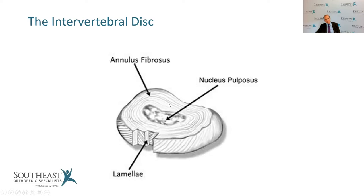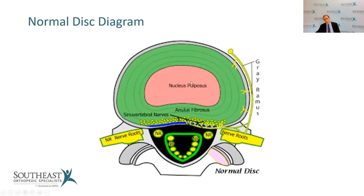When you get accumulation of tears and rents within the annulus fibrosus — the layers of cartilage — and the nucleus pulposus is under pressure, it starts to seep through those layers, and that's when we get a degenerative disc. Here we can see the nucleus pulposus and the annulus fibrosus, which are the layers of cartilage. This picture depicts the innervation of these structures.